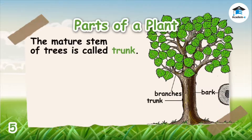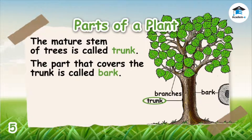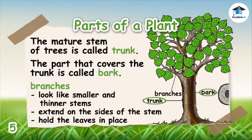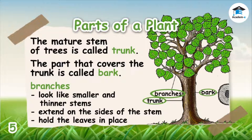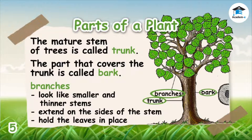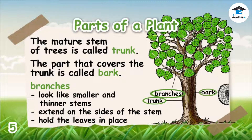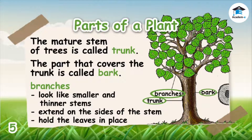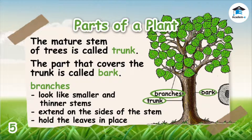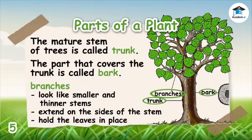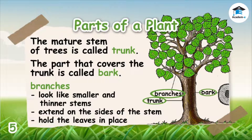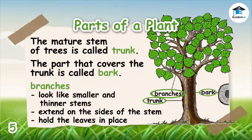The mature stem of trees is called a trunk. The part that covers the trunk is called bark. Trunks have branches, which look like smaller and thinner stems. Branches extend on the sides of the stem and are the ones that hold the leaves in place. Sometimes tiny openings called lenticels are found along the stems and branches of trees.